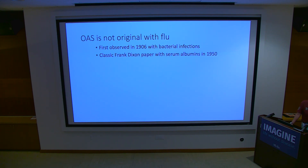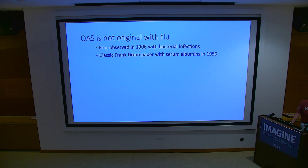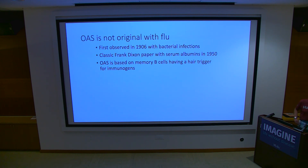Frank Dixon, who basically started the Scripps Institute, had a paper with serum albumin — immunized rabbits with horse serum albumin, boosted with rabbit serum albumin, you make a better response to horse serum albumin. That's OAS. What it's based on is memory B cells being easier to trigger than naive B cells. This is not inevitable — the immune system evolved to do this.